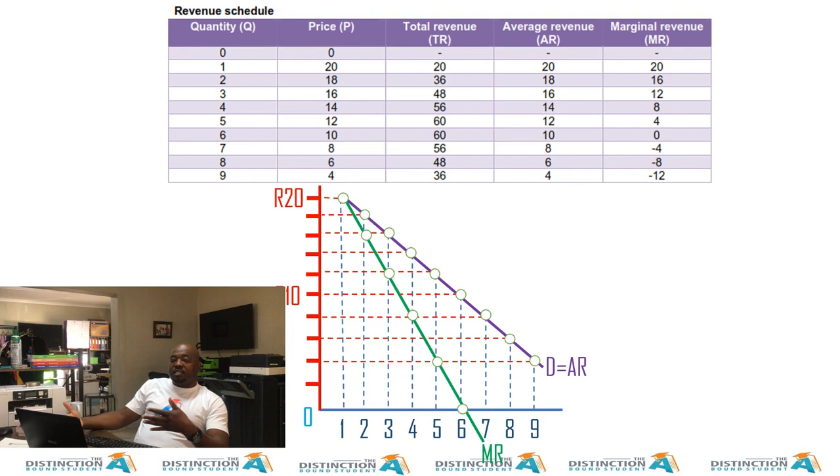Now, if they recycle that same question, they'll ask the question under perfect competition and the question would then be, why are they equal? And the answer is because each additional unit is sold at the same price. So with perfect competition, you say each additional unit is sold at the same price. With monopoly, you say each additional unit is sold at a lower price.